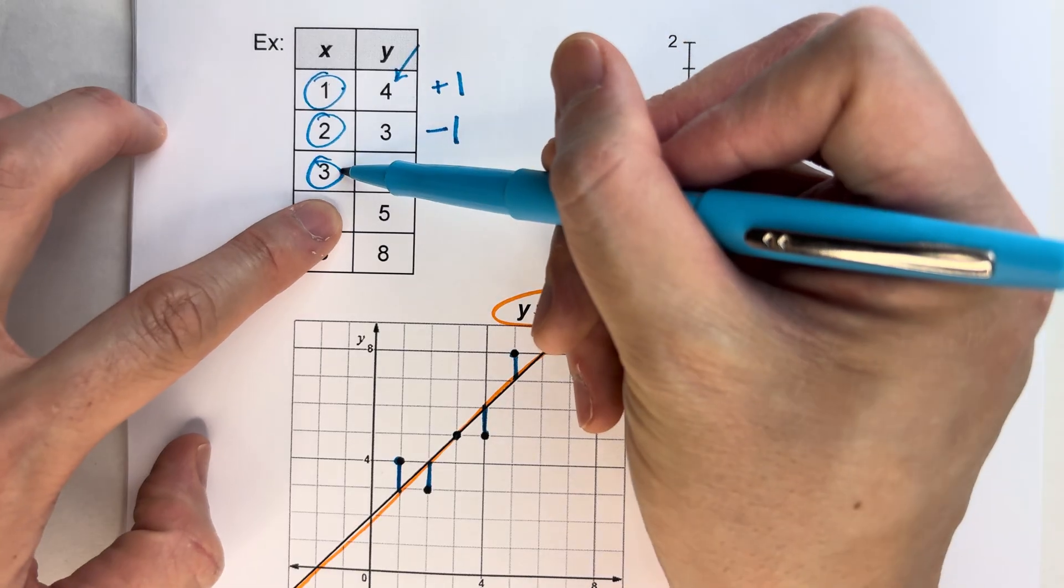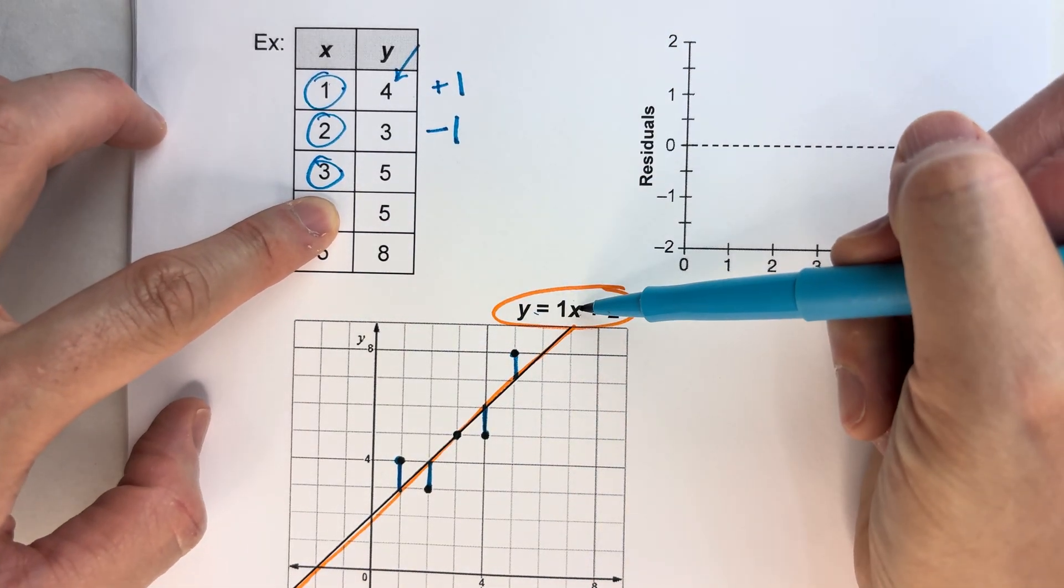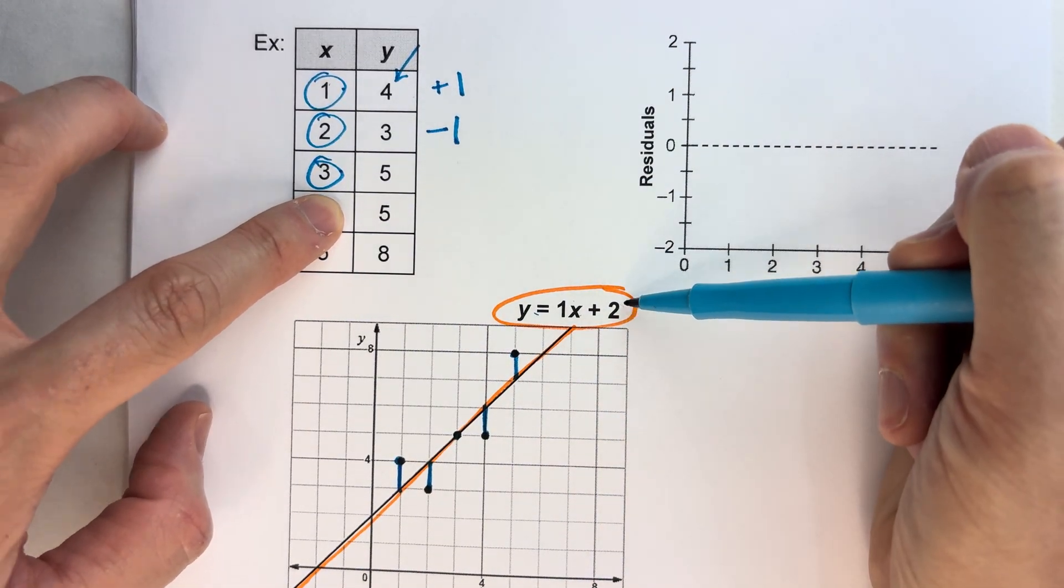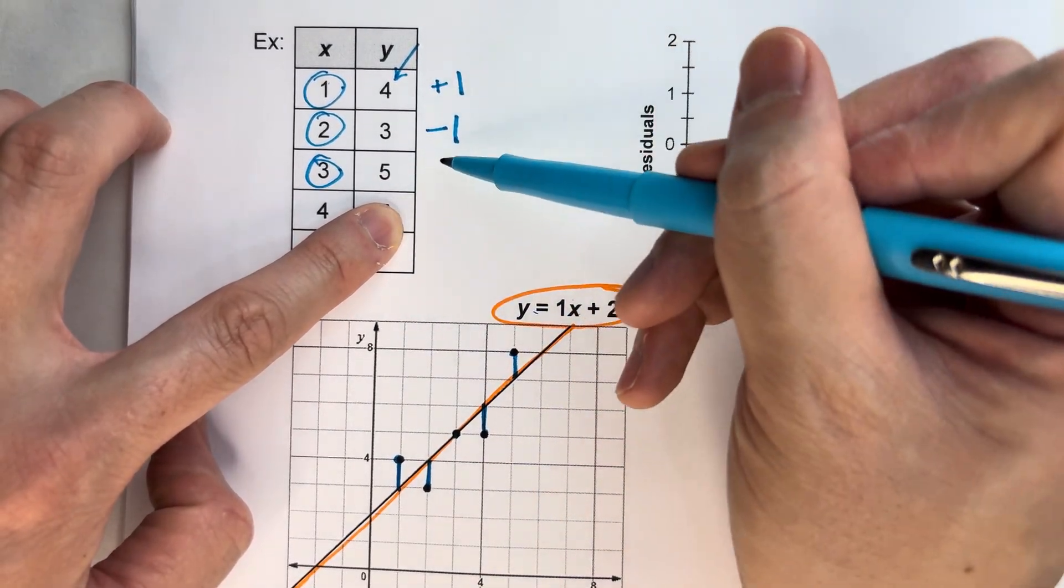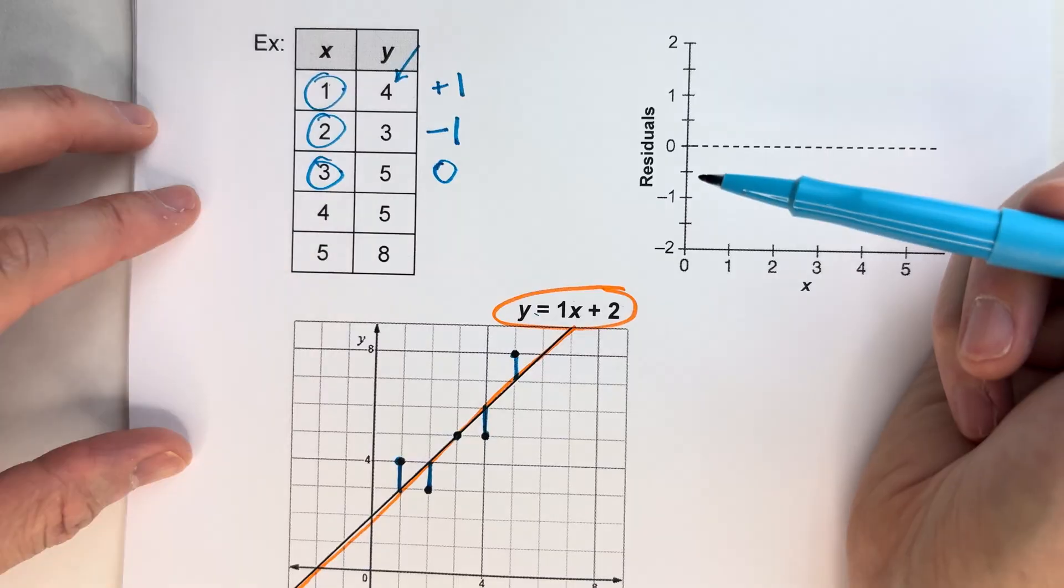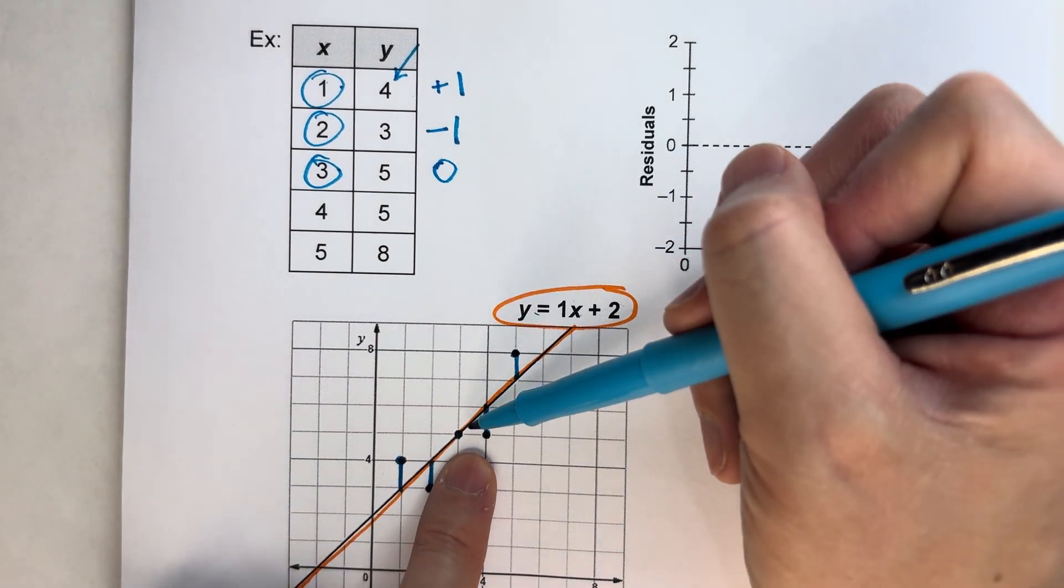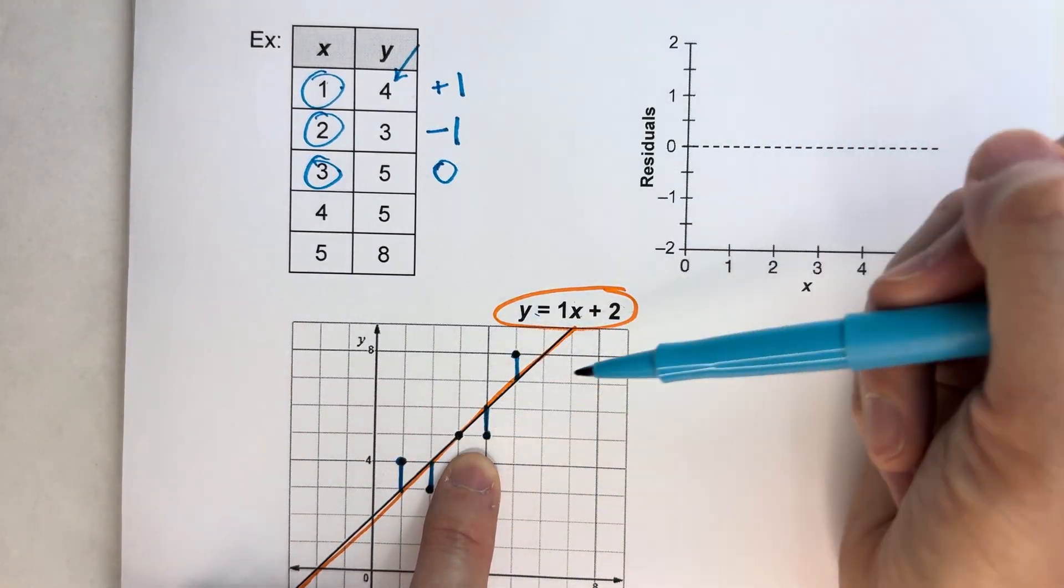Now this is 3. If I put in 3 here, 1 times 3 is 3 plus 2 is 5. And look, that's exactly what we got. 5. So what we predicted and what we got were the same. So our residual is 0 because it came out exactly. And again, remember, if you look on your graph, it actually lands on there.